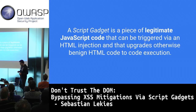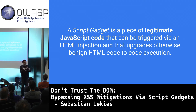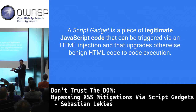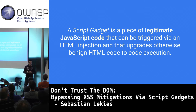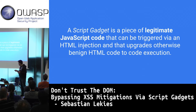To summarize: a script gadget is a legitimate piece of JavaScript in a page that takes a seemingly benign piece of HTML and upgrades it to code execution. That's how we can bypass XSS mitigations.